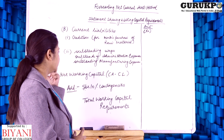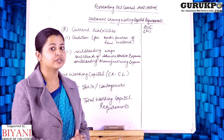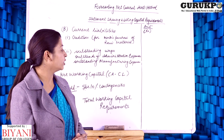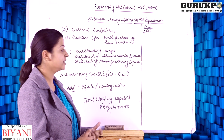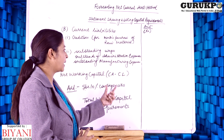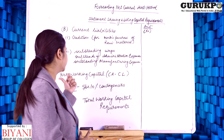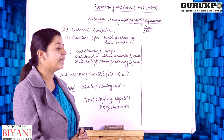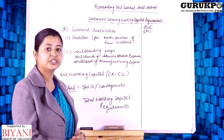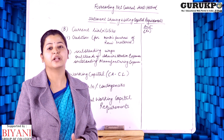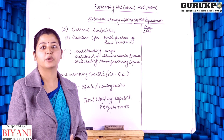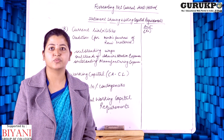Then we find out net working capital, that is current assets minus current liabilities. We subtract the forecasted current liabilities from the forecasted current assets to get net working capital. We then add some provision or contingency for future uncertainties, and in the end we get the total working capital requirement.